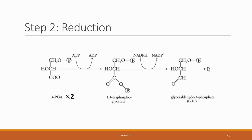Stage two is the reduction phase. The three-phosphoglycerate is reduced with the use of both ATP and NADPH to generate another high-energy molecule called glyceraldehyde-3-phosphate (G3P).